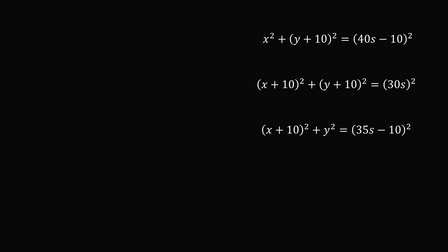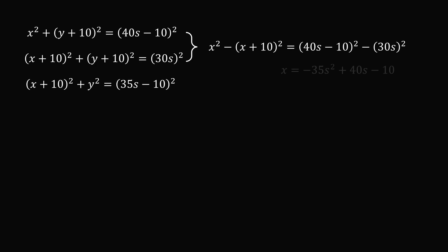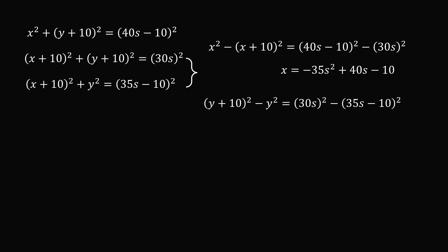Let's focus on these three equations. As a usual trick, let's subtract one equation from the other. Subtracting the second equation from the first eliminates the term (Y plus 10) squared, giving us an equation we can solve for X in terms of S: X equals negative 35S squared plus 40S minus 10. Subtracting the third equation from the second eliminates (X plus 10) squared, giving us Y equals negative 65S squared over 4 plus 35S minus 10.